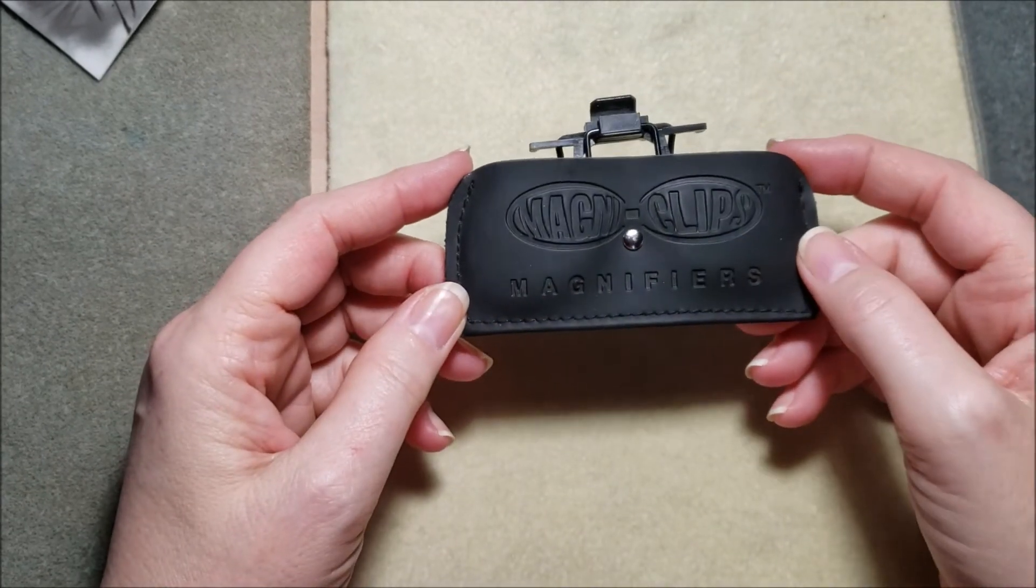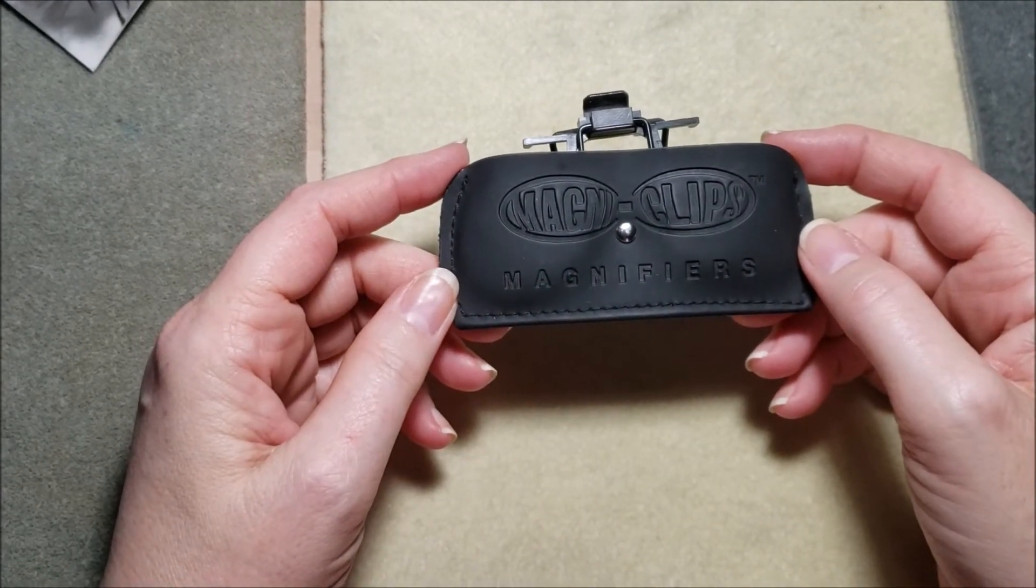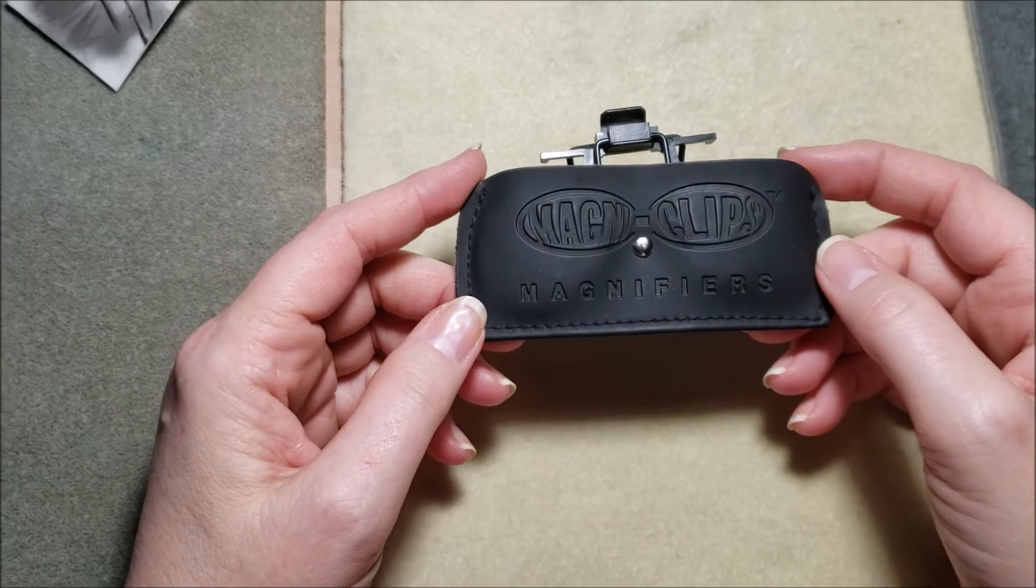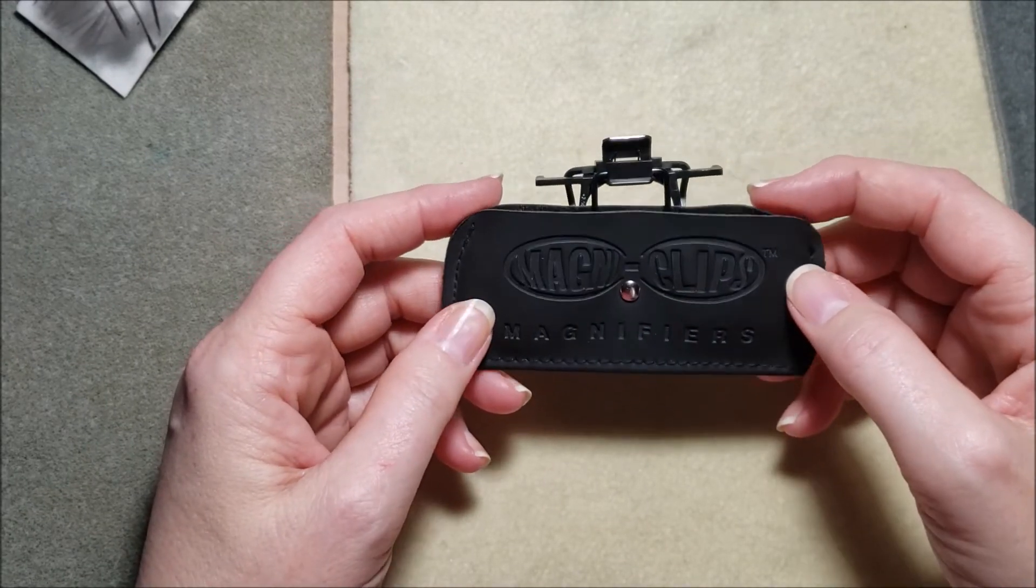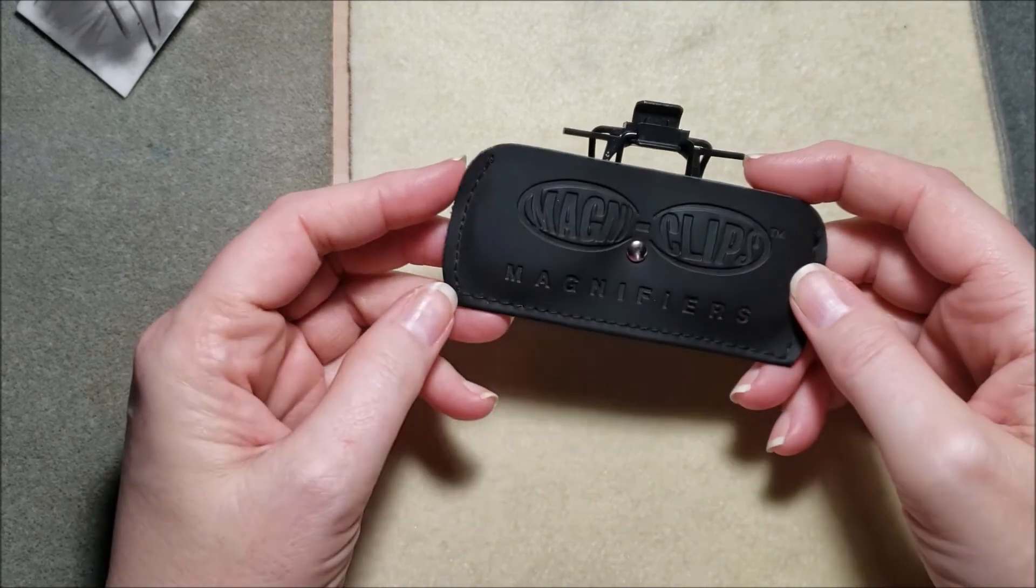They come in handy, especially for Viking wire knitting because copper wire or any wire for that matter, that's 26 gauge, 28 gauge, it's pretty fine stuff. And it keeps you from literally missing a stitch.